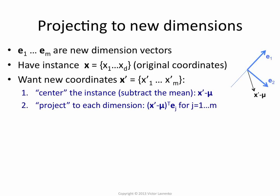We have m eigenvectors, so we do this m times. Pictorially, here are our two dimensions e1 and e2. Here is our x minus mu — the new data point with the mean subtracted. Everything is a vector, so we project by doing a dot product between this centered x and e1. The dot product between e1 and x figures out where along this coordinate the point falls — that's the definition of the dot product. Then we do the same thing with e2.